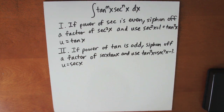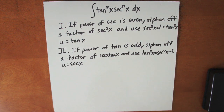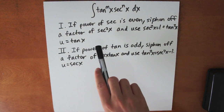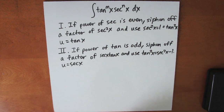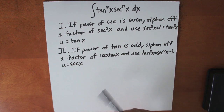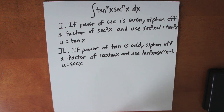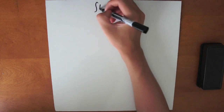Now let's talk about how to evaluate integrals of the form tan to the nth power x times secant to the nth power x dx. The first rule is: if the power of secant is even, siphon off a factor of secant squared x and use secant squared x equals 1 plus tangent squared x, then use the substitution u equals tan x. If the power of tangent is odd, siphon off a factor of secant x tan x and use tan squared x equals secant squared x minus 1, then use the substitution u equals secant x.